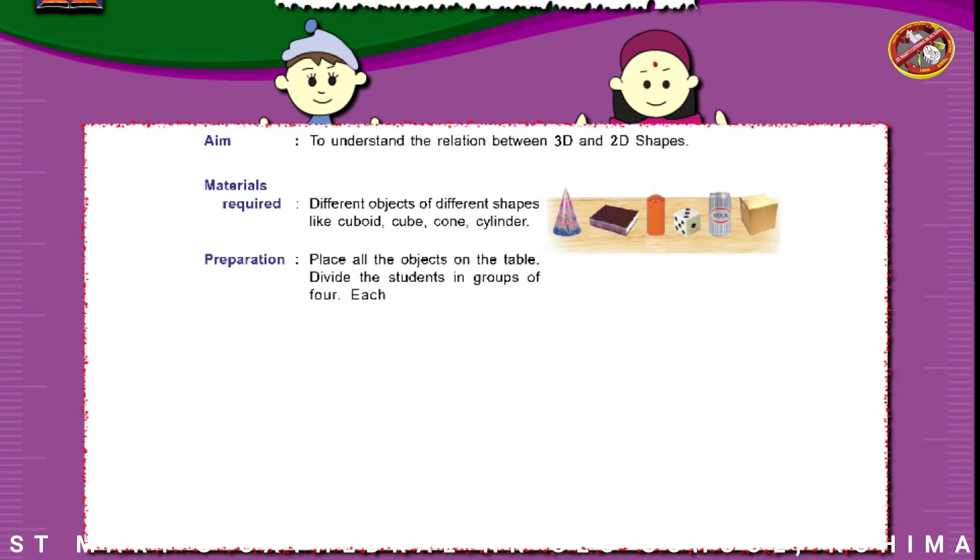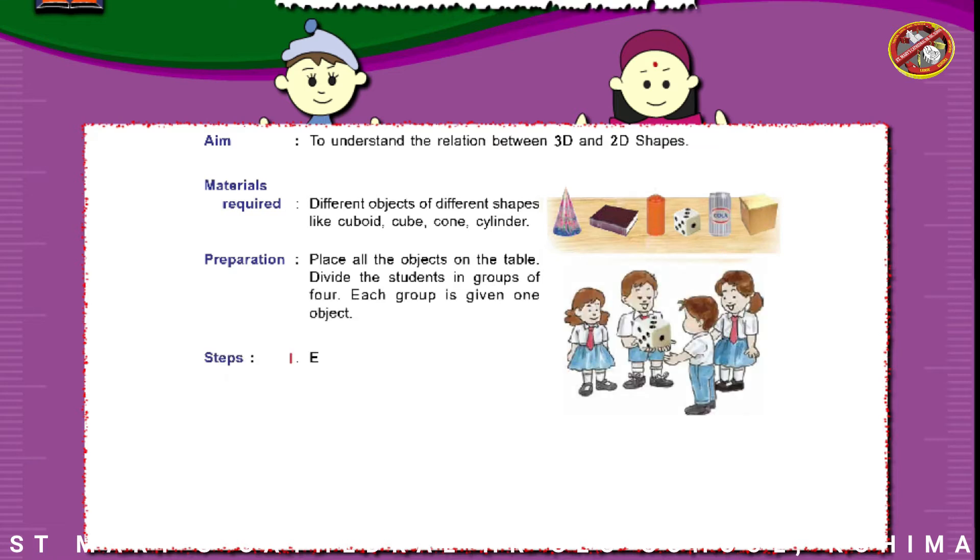Each group is given one object. Steps: Each group is given enough time to discuss the various features like name of the solid shape, number of faces, edges, and corners. Ask a student from group A to name the solid shape.